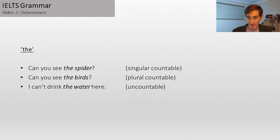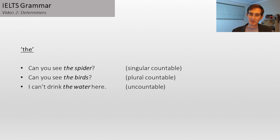Here are some examples of how 'the' goes with different kinds of nouns. Some people think 'the' only goes with singular nouns — that's not true. It can go with singular, plural, and uncountable. For example, a singular noun: 'Can you see the spider?' — the one I'm looking at. 'Can you see the birds?' — plural. 'Can I drink the water?' — uncountable. So it goes with all of those.